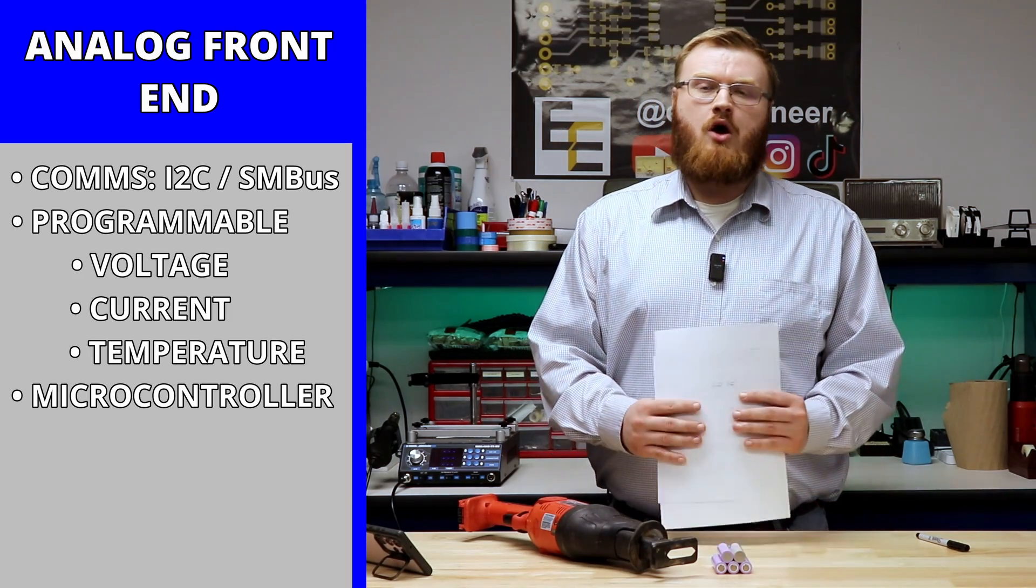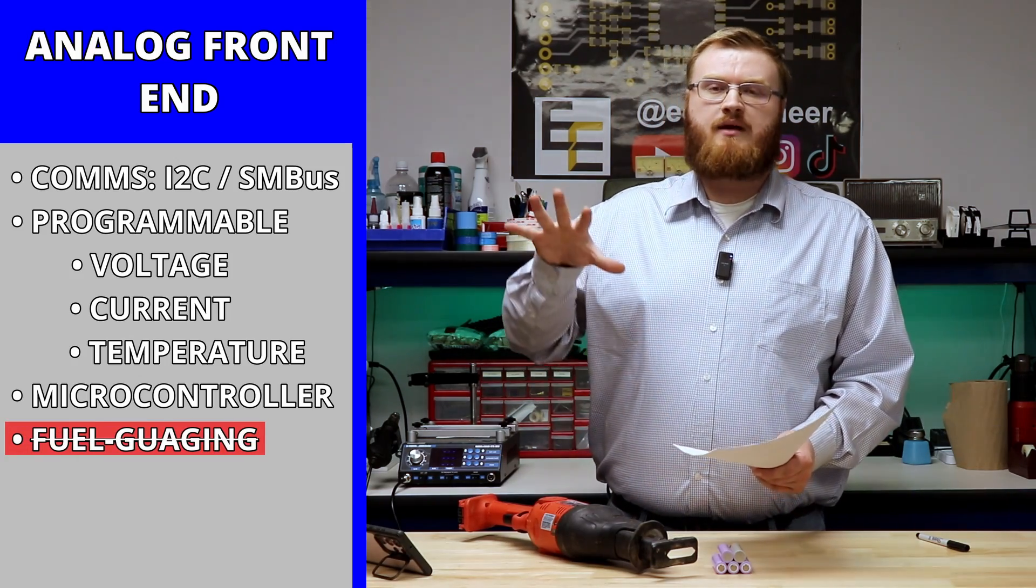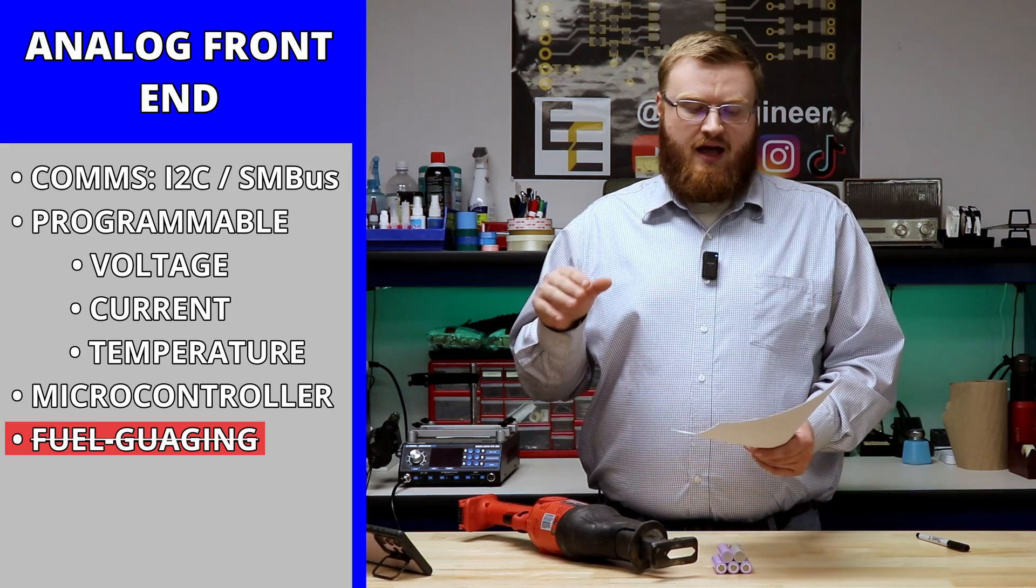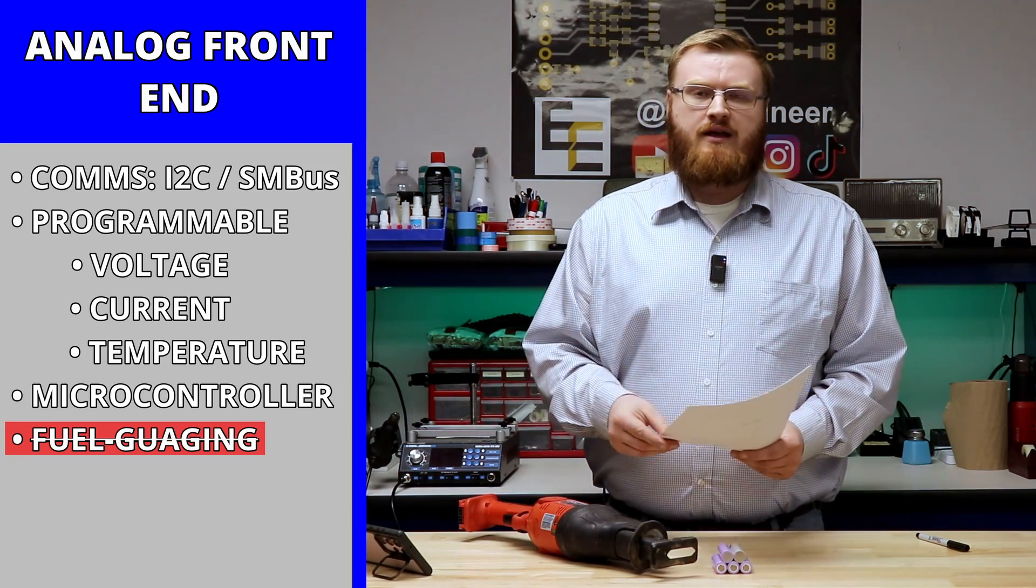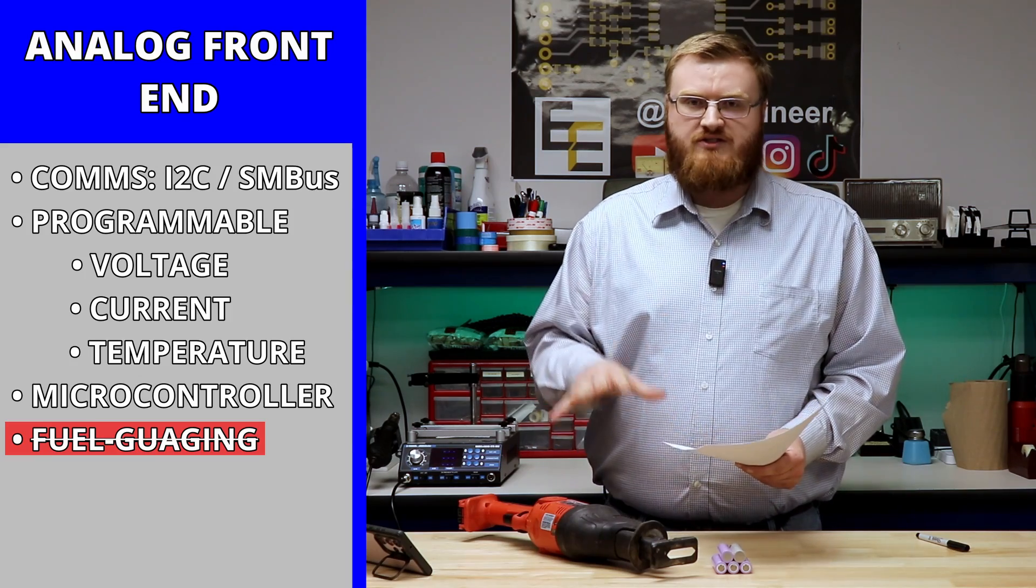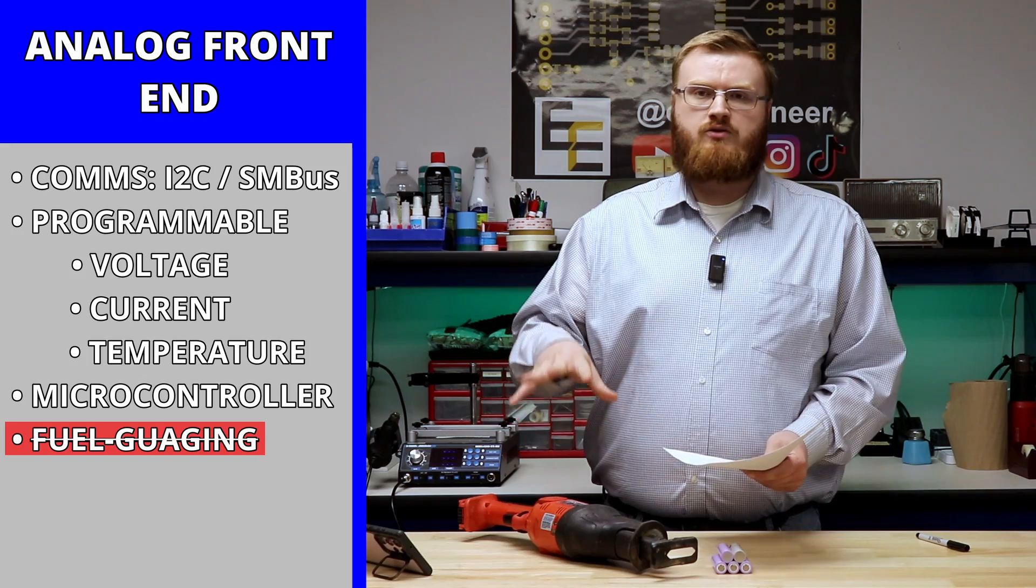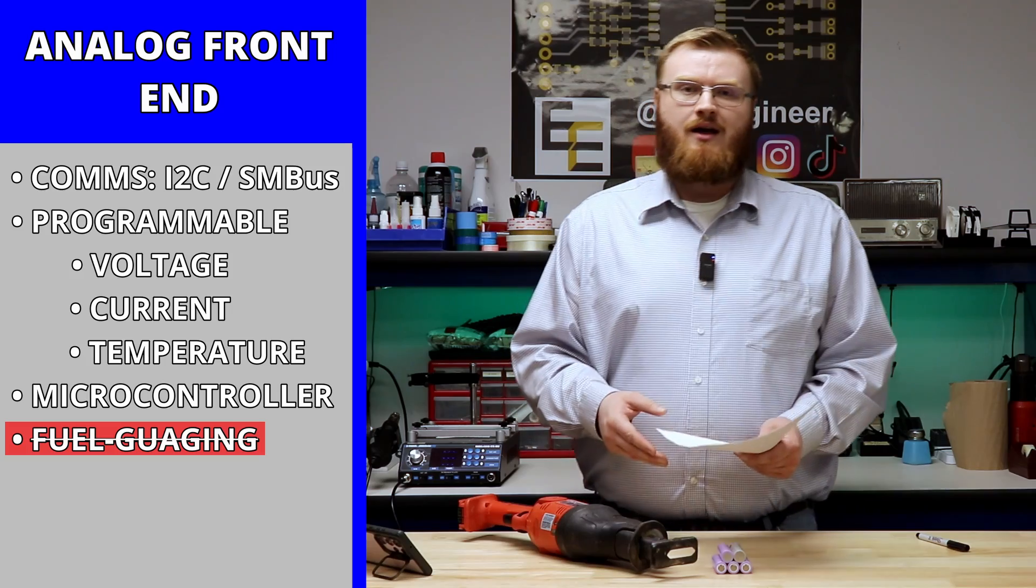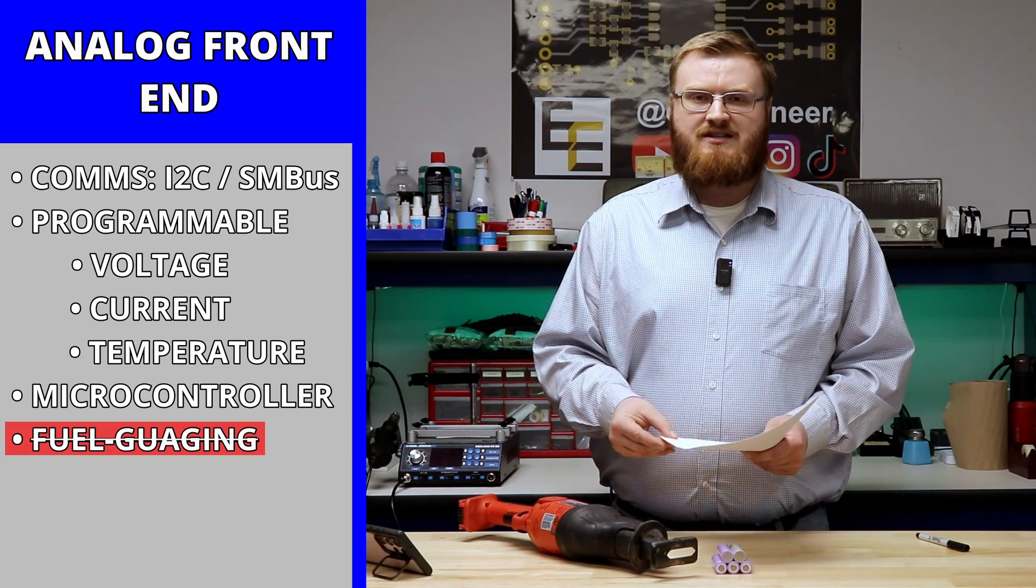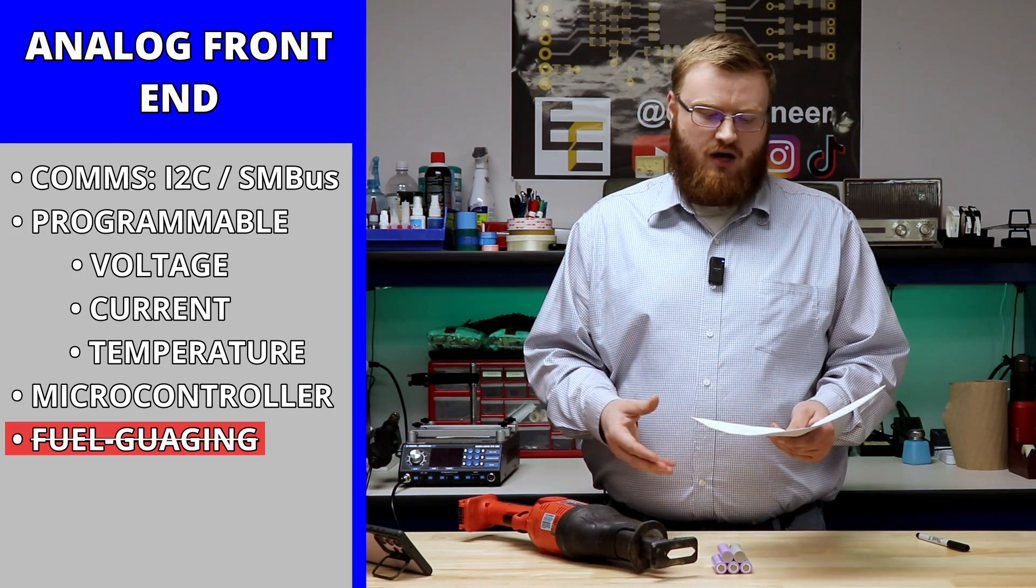Now no analog front ends offer any kind of fuel gauging. That is something that you'll have to implement on your system itself. So the analog front ends, if you're not going to make a custom system, a fully customized BMS where you have a microcontroller that does all the BMS functions, that can be a really big downside to the AFE since they really cannot stand alone and have full autonomy.